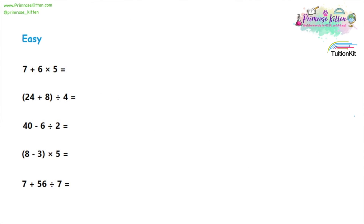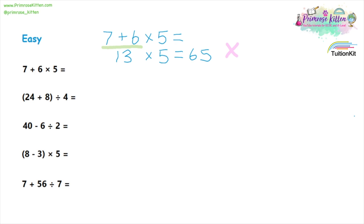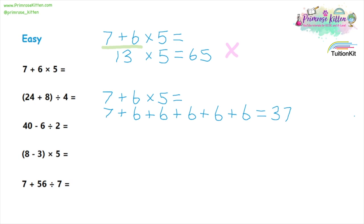These are the questions we are going to start with. Now if you just did these from left to right, seven plus six will give us 13, and then 13 times five will give us 65. But if you tap that exact sum into your calculator, you would not get 65, because seven plus six is not the bit that we need to do first. The bit we need to do first is six times five. The answer we get for this is 37.